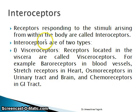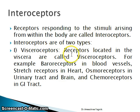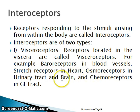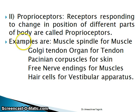Interoceptors: receptors responding to stimuli arising from within the body are called interoceptors. They are of two types: visceroceptors and proprioceptors. Visceroceptors are receptors located in the viscera (organs). Examples include baroreceptors in blood vessels, stretch receptors in the heart, osmoreceptors in the urinary tract and brain, and chemoreceptors in the GI tract.